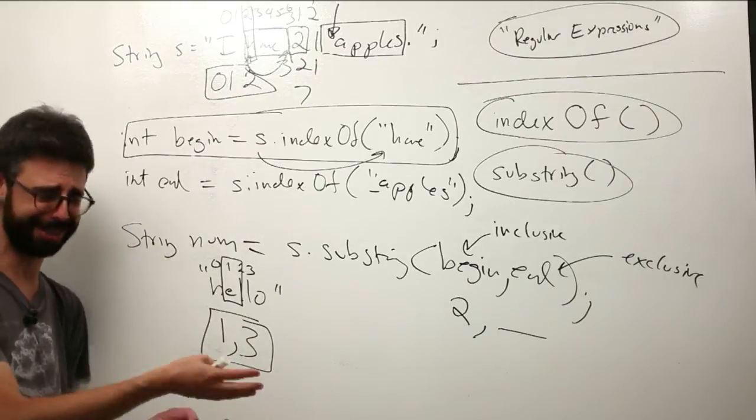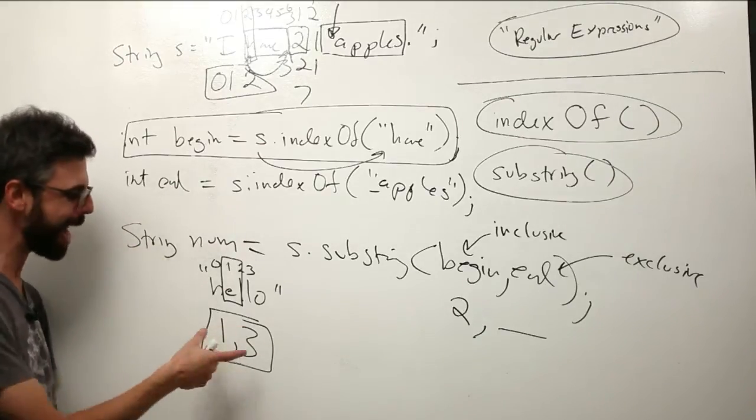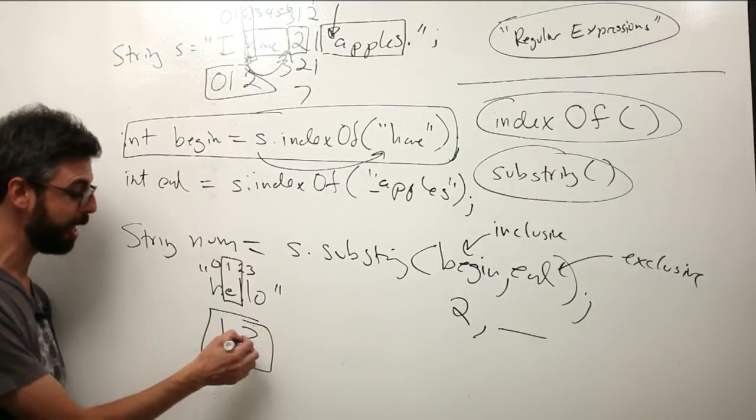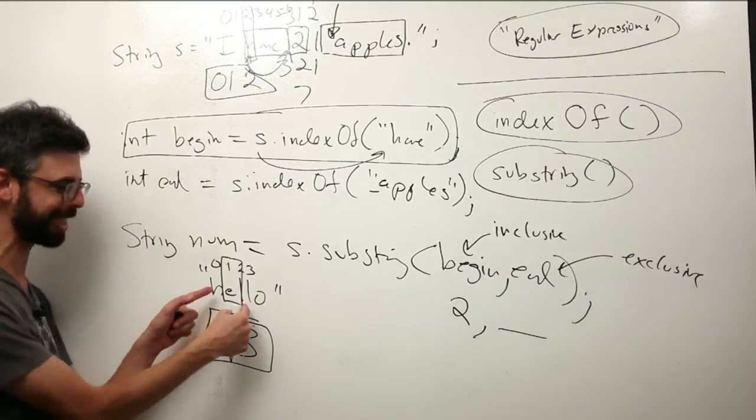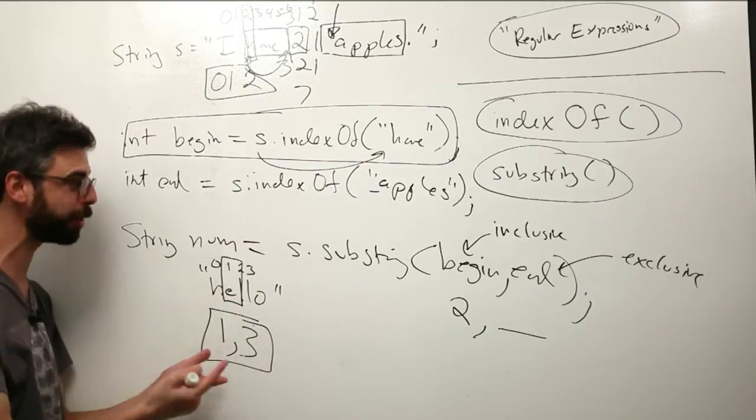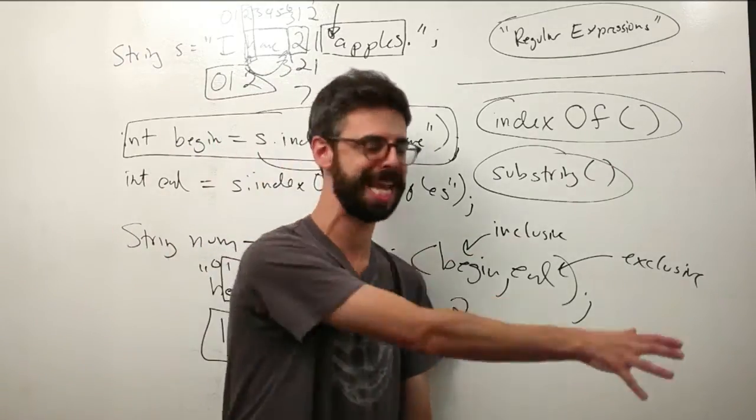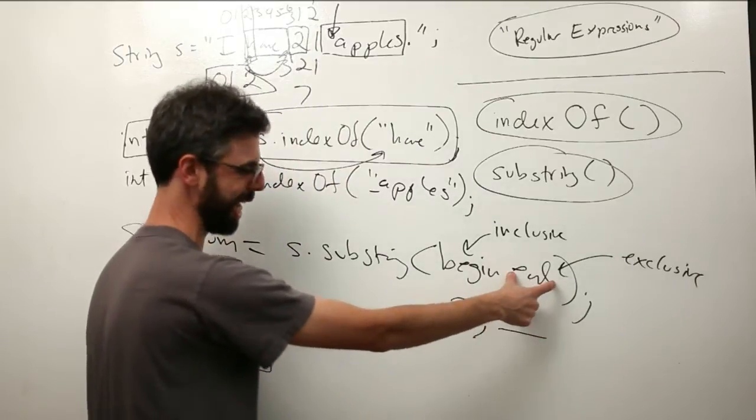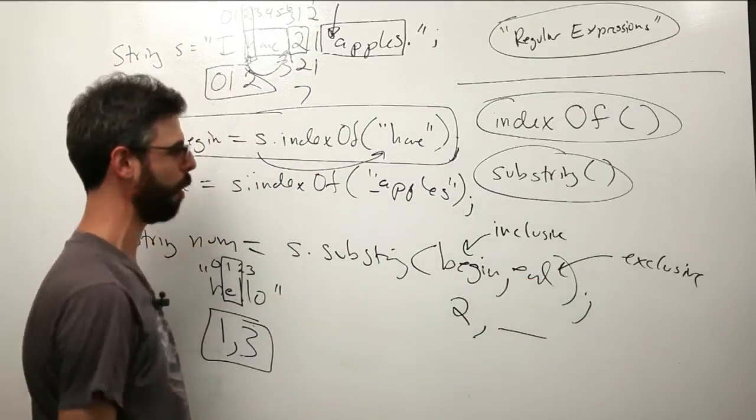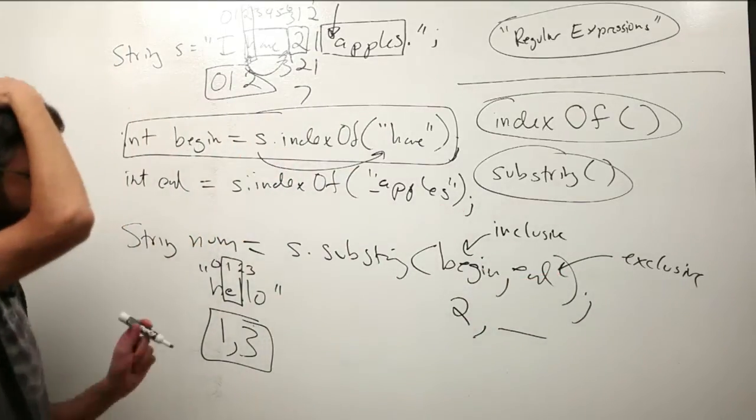It might seem like a weird thing like, oh, this is kind of annoying. This seems to be very confusing, but it actually makes sense because if I were to say three minus one is two, that's the length of the substring we pulled out. It also works really nicely if I want a substring from somewhere in the string all the way to the end, then I can just put s.length, the length of the string there, and it will work. Okay, so those are two little pieces of information.